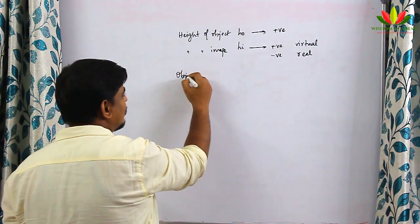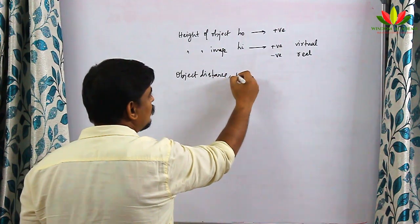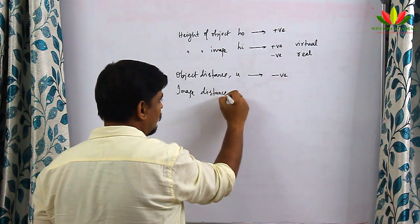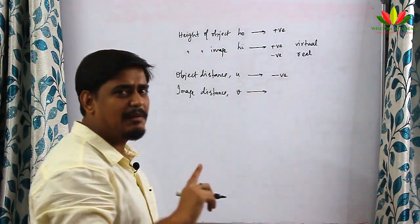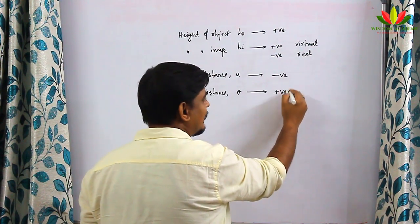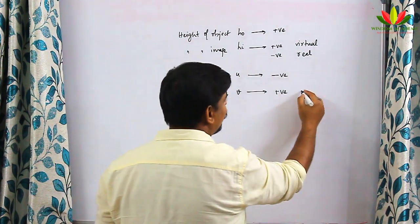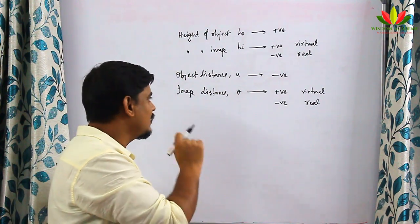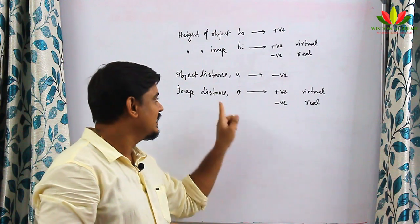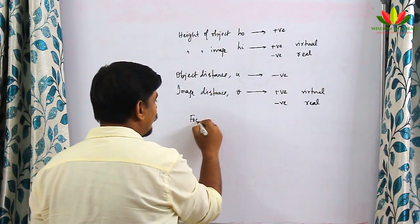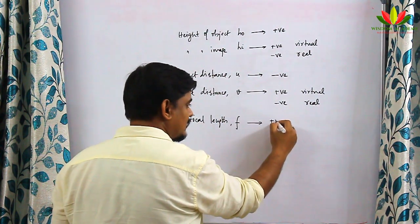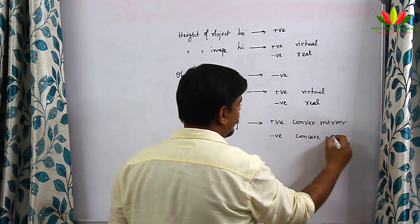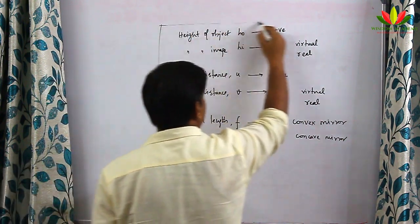Object distance (u) will always be negative. Image distance (v) will be positive if the image is a virtual image, and negative if the image is a real image. Focal length (f) will be positive for a convex mirror and negative for a concave mirror.